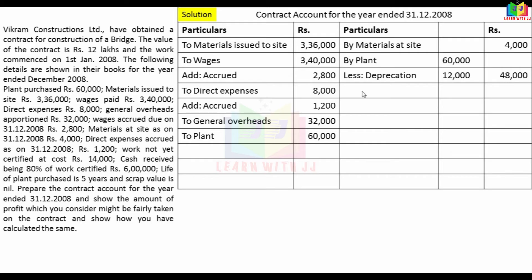Now we will have work in progress — work certified and work uncertified. Cash received is 80% of work certified. Cash received is Rs. 6,00,000, so 100% of work certified = Rs. 7,50,000. Adding work uncertified Rs. 14,000, total work in progress = Rs. 7,64,000. Work certified is Rs. 7,50,000.